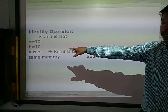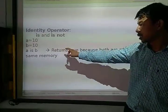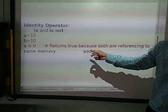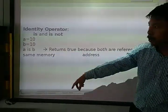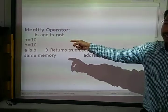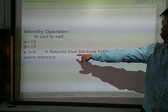So a is b will return true because both are referring to the same memory address. Since a and b are both referring to 10, meaning where the 10 is stored, that is why a is b will return true.